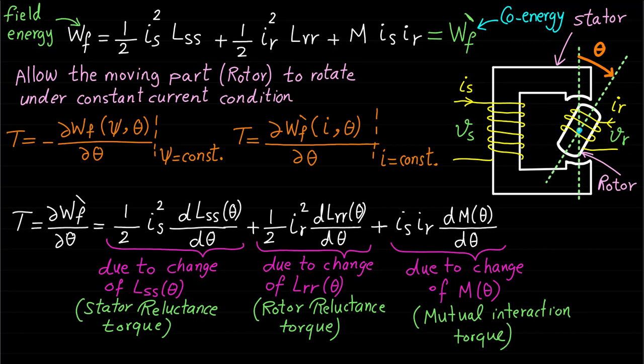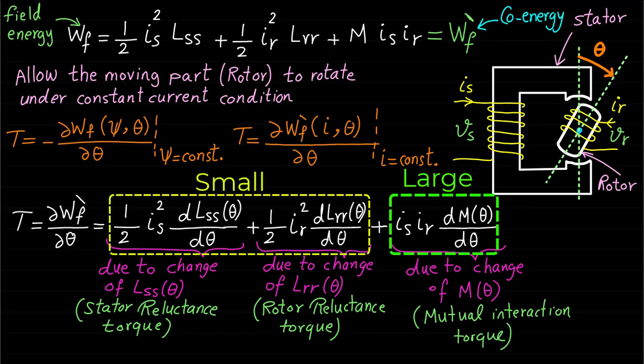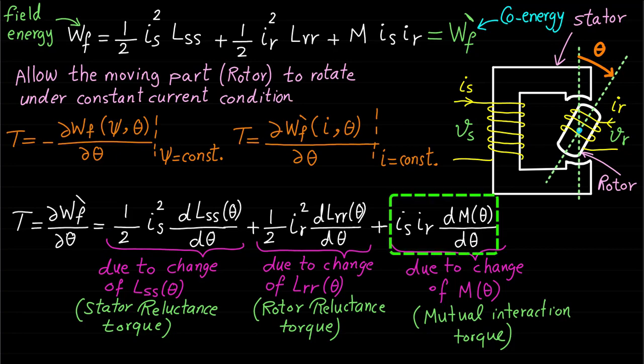This mutual inductance torque component can also be called the primary or main torque. Usually, the main torque or mutual interaction torque is larger than the reluctance torque components. The direction of the two reluctance torque components depends on the change of the self-inductances only and is independent of current direction because the current is squared. The direction of the mutual torque component depends on the change of mutual inductance and on the direction of both stator and rotor currents — it can be negative if Is and Ir have different signs, and positive if they have the same sign.